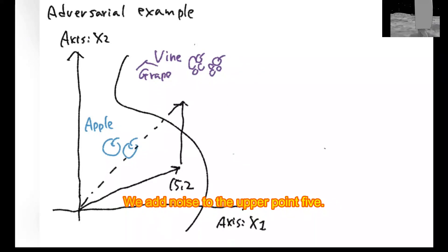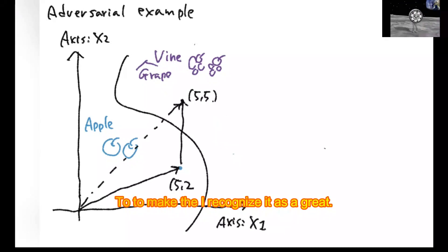Now, we add noise to the apple at point (5, 2) to make the AI recognize it as a grape.